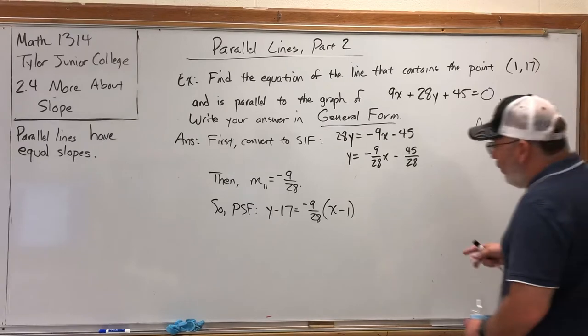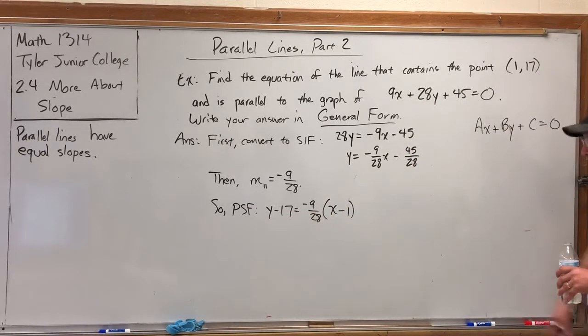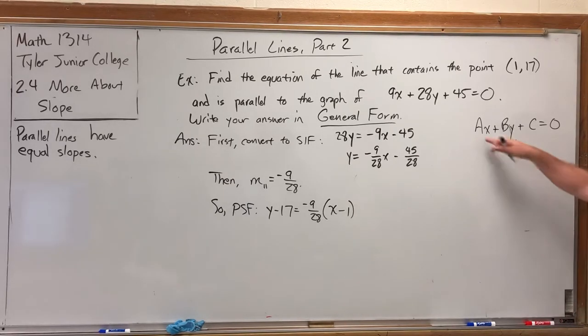So what do we got to do to convert point-slope form to general form? We'll fix everything that's wrong. What's wrong with point-slope form? Number one: we have parentheses and we don't want them. Number two: it's not equal to zero. Number three: it's got a fraction in it.